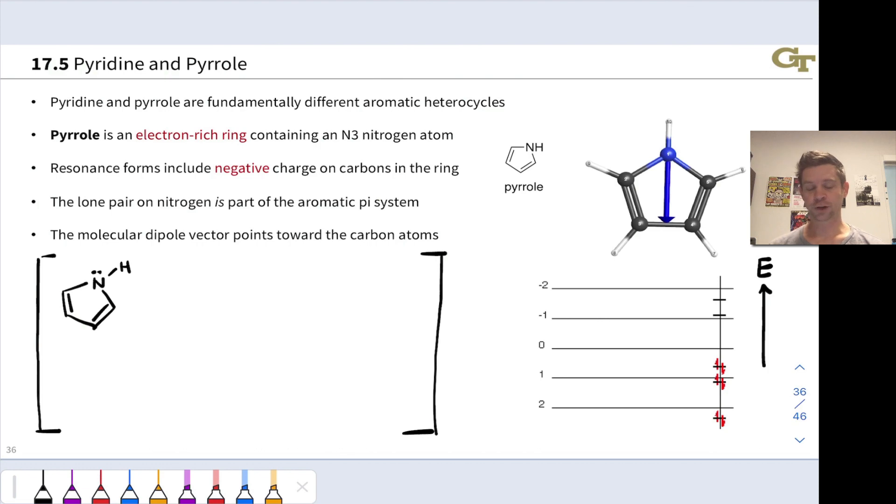Pyrrole is an electron-rich ring, and in fact, as we'll see via resonance structures here in a second, it's nucleophilic really at all four carbons. This is a very electron-rich heterocycle, but particularly at these carbons adjacent to the nitrogen are quite nucleophilic. Now, this is a molecule that wants to give electrons away at these carbons with an excess of electron density on those carbons.